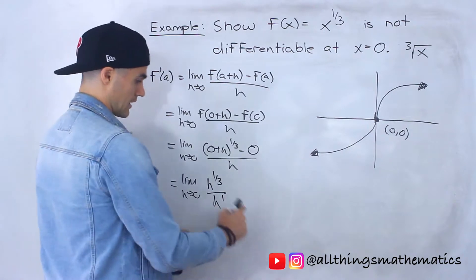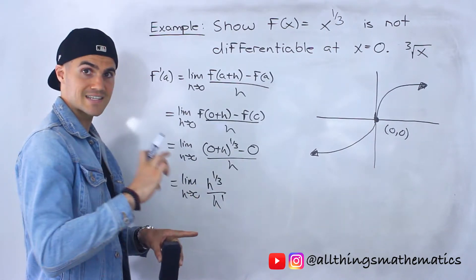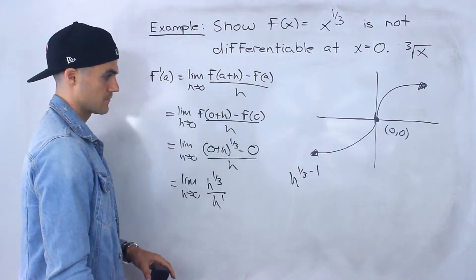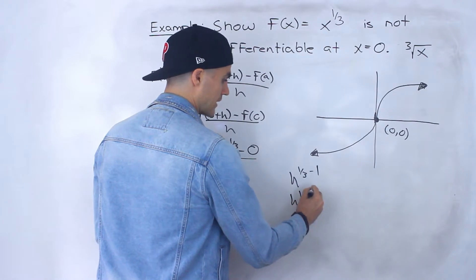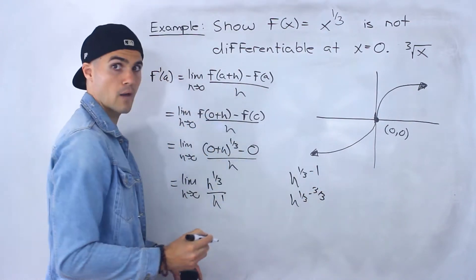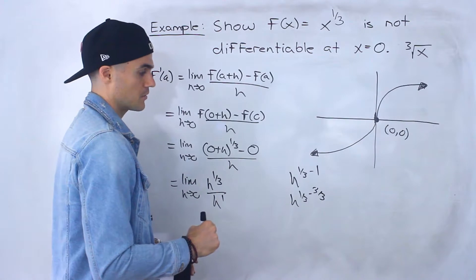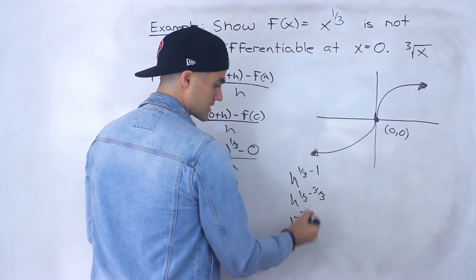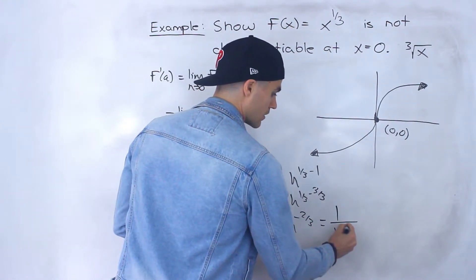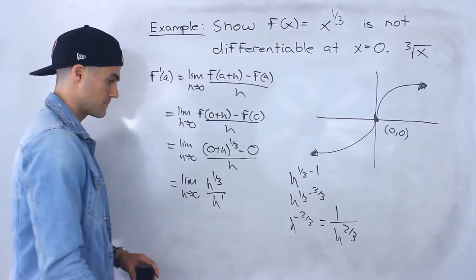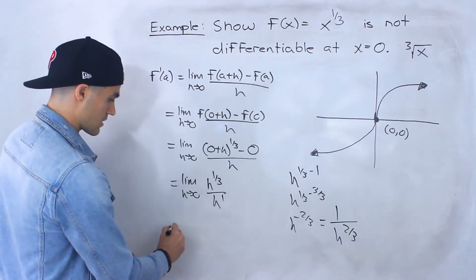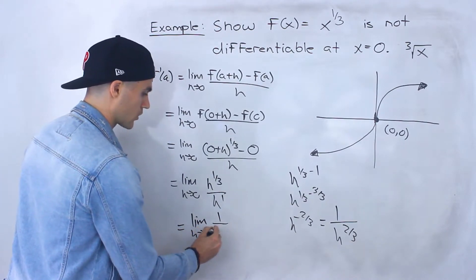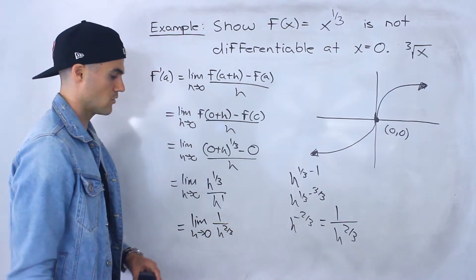Notice that we have two exponents dividing with the same base, so we can subtract the exponents. We get h to the power of 1/3 minus 3/3 — converting that 1 to a fraction with a common denominator — which gives h to the power of negative 2/3. Since 1/3 minus 3/3 equals negative 2/3, we can rewrite that as 1 over h to the power 2/3.